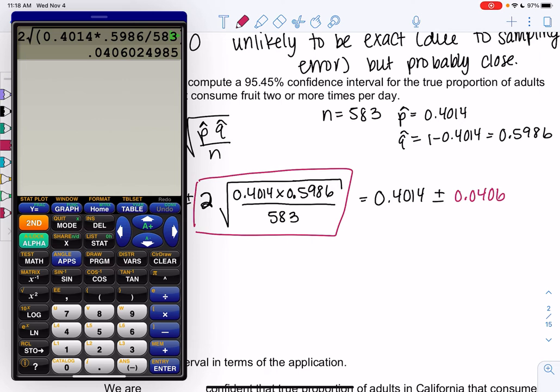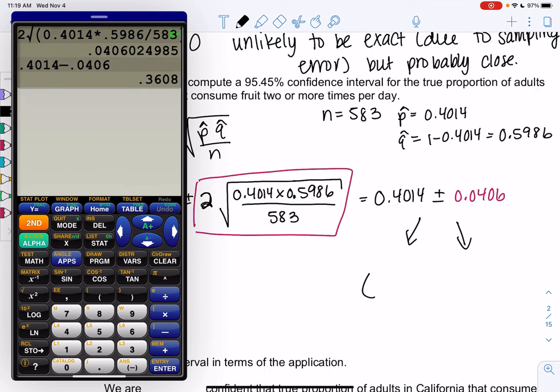Just like expected range, we're going to add and subtract. I always do subtraction first because the smaller number comes first. So 0.4014 minus 0.0406. We get 0.3608. I'm going to put it in parentheses with a comma. And then you can hit second enter and just change it to a plus sign. 0.4420. And then I'm going to add a zero just so decimal places match. And that is our confidence interval.